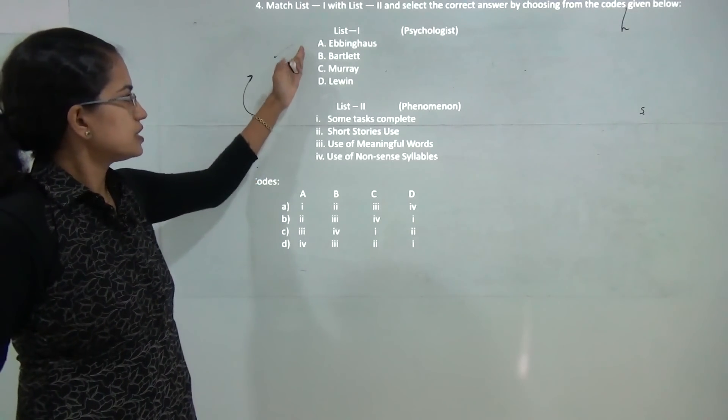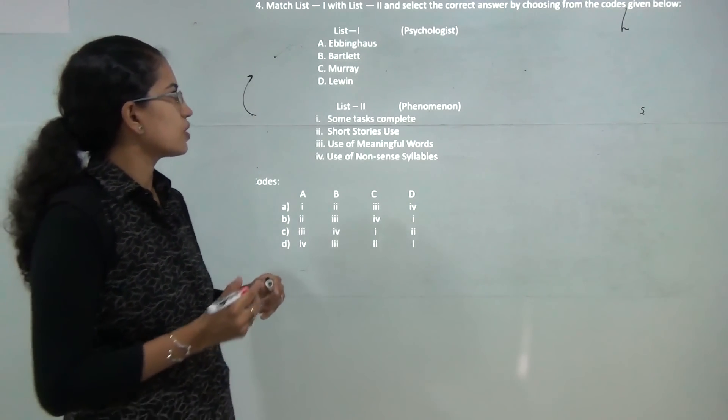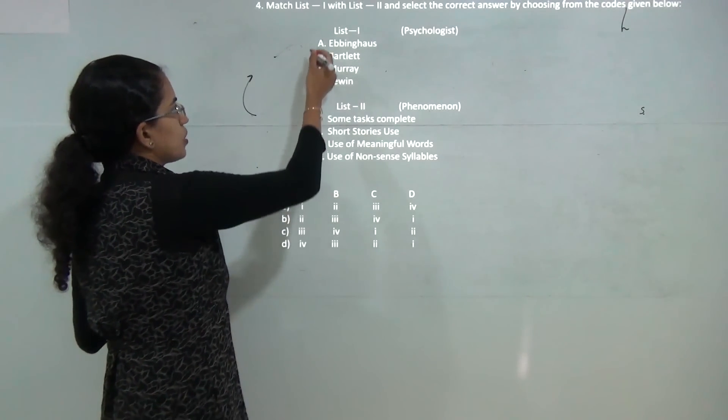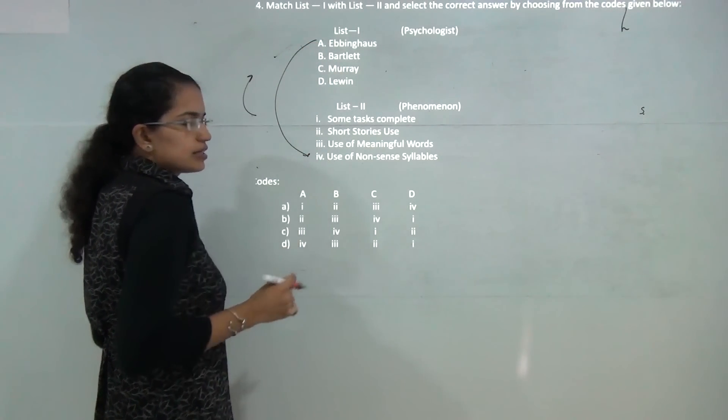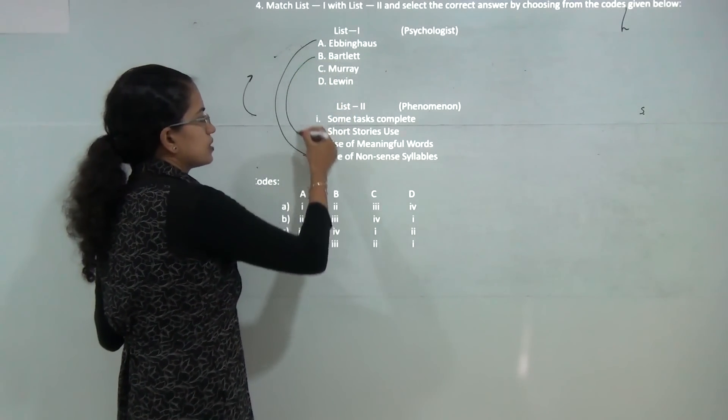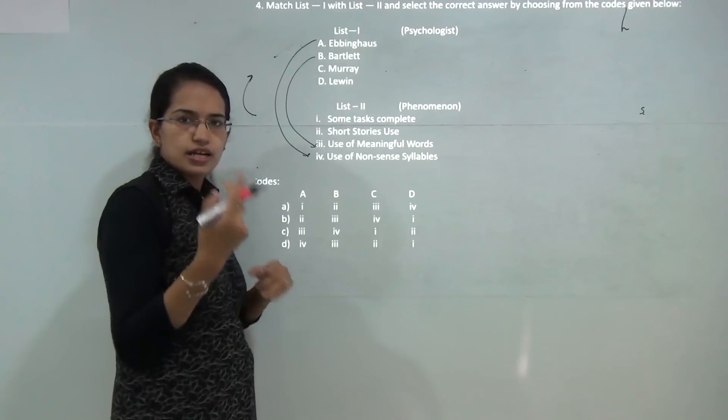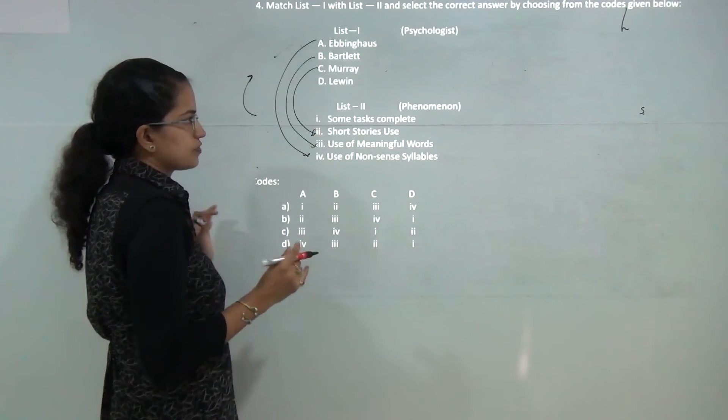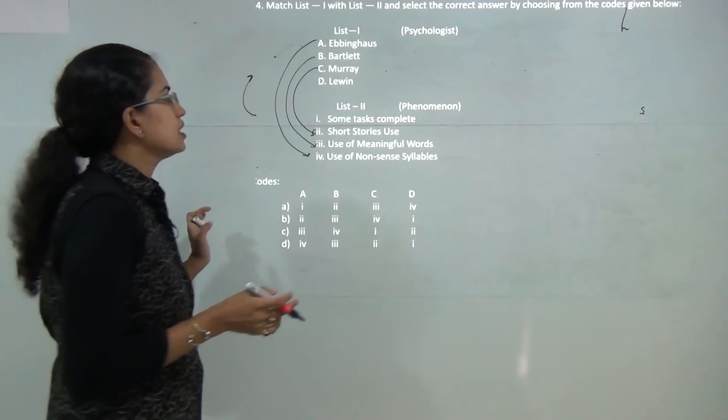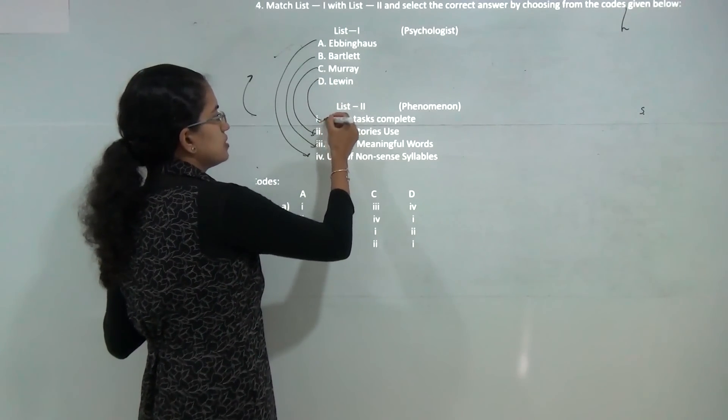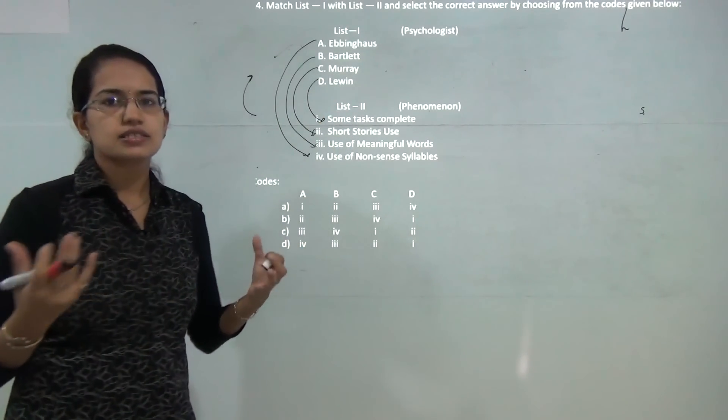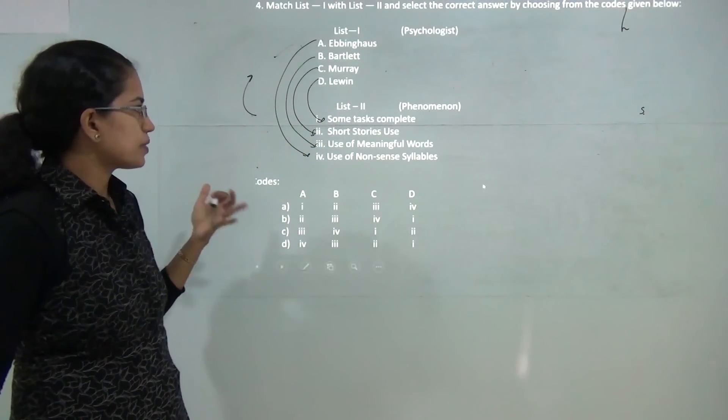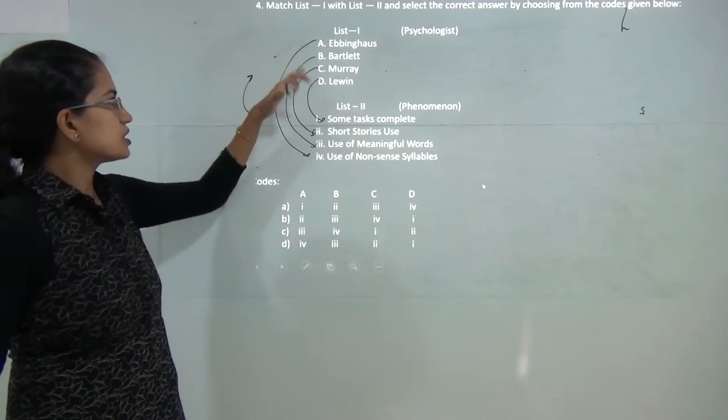Next: you have the psychologist and the phenomena they talked about. So you have to do a correct match. Ebbinghaus talked about the nonsense syllables in the theory of forgetting. Bartlett talked about the use of meaningful words in contrast to Ebbinghaus theory. Then you have Murray who talked about the TAT analysis where he used short stories. And finally Lewin explained that some tasks could be completed and some remain uncompleted. So that was the concept that was propounded by Lewin. So these are the correct matches.